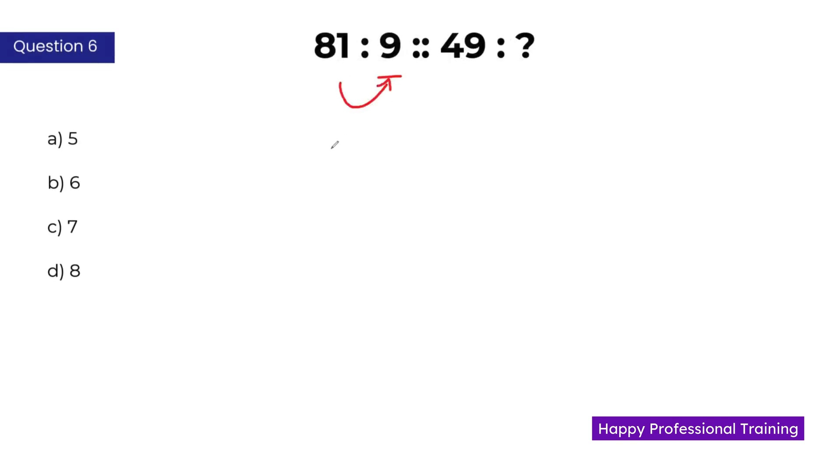The second number is the square root of 81. Square root of 81 is 9. Similarly, if we apply the same rule, what is square root of 49? It is 7. So C is the correct answer here.